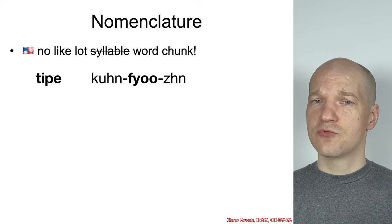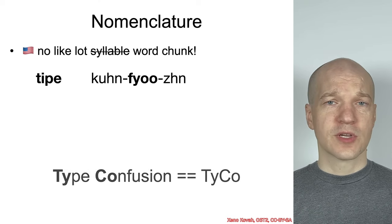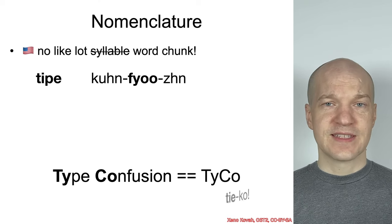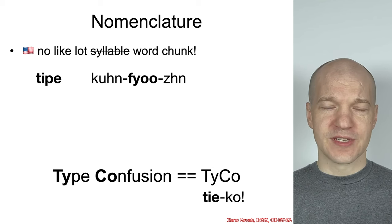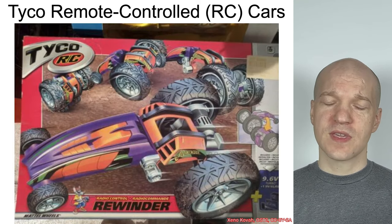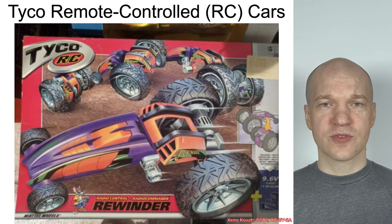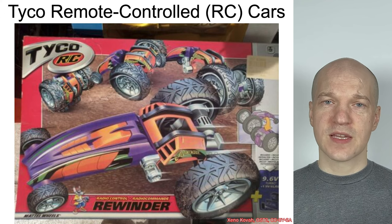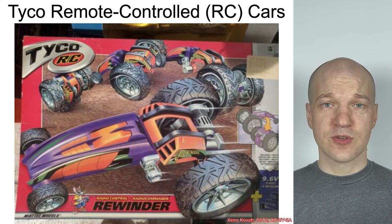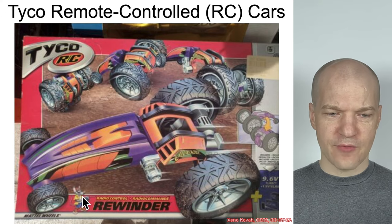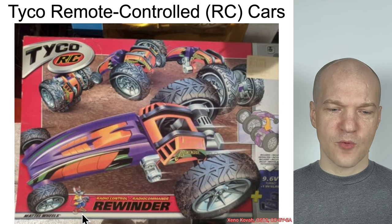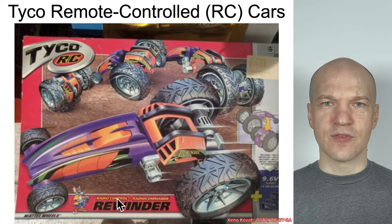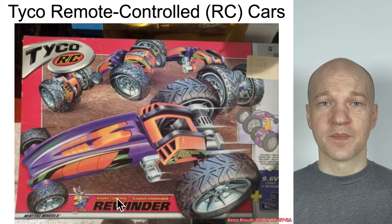So instead of type confusion, we're going to call it Tyco — Tyco vulnerabilities. And Tyco might make you think of those remote controlled cars from the 90s where nothing was cooler than looking like a rat with sunglasses and a backwards cap wearing sneakers and a t-shirt over a t-shirt.